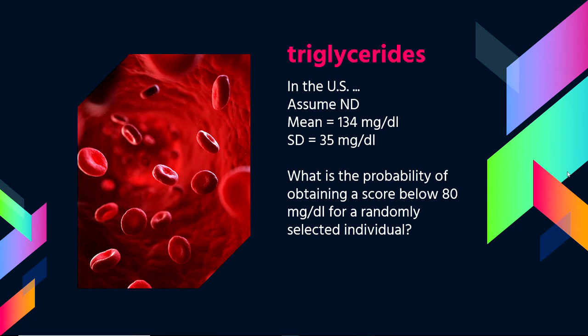Say that in the United States, triglycerides are normally distributed and the average triglycerides are 134 milligrams per deciliter, and the standard deviation is 35 milligrams per deciliter. We could then ask medically: what is the probability of obtaining a score below 80 for a randomly selected individual? We can do this by converting these values into Z-scores and then getting the probability associated with the Z-score.